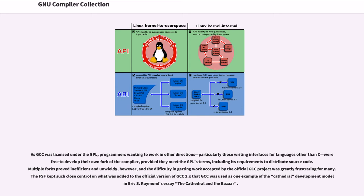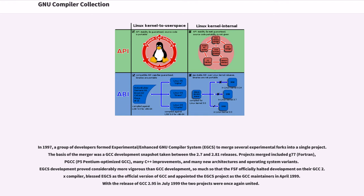Multiple forks proved inefficient and unwieldy, however, and the difficulty in getting work accepted by the official GCC project was greatly frustrating for many. The FSF kept such close control on what was added to the official version of GCC 2.x that GCC was used as one example of the cathedral development model in Eric S. Raymond's essay The Cathedral and the Bazaar. In 1997, a group of developers formed the Experimental/Enhanced GNU Compiler System, EGCS, to merge several experimental forks into a single project. The basis of the merger was a GCC development snapshot taken between the 2.7 and 2.81 releases. Projects merged included G77 Fortran, PGCC P5 Pentium-optimized GCC, many C++ improvements, and many new architectures and operating system variants.